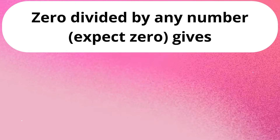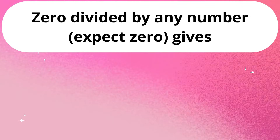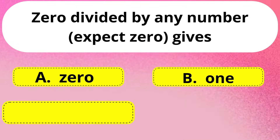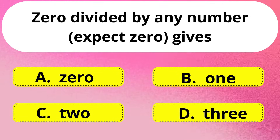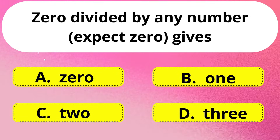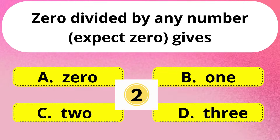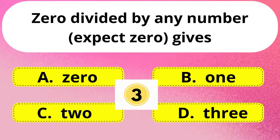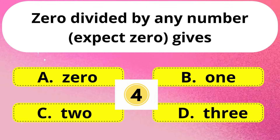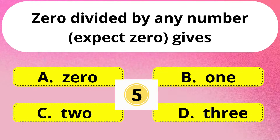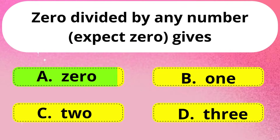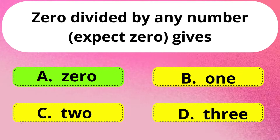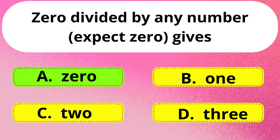Next question. 0 divided by any number except 0 gives? Correct answer is Option A: 0.